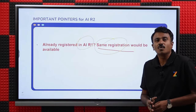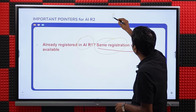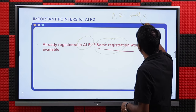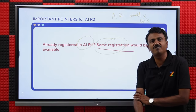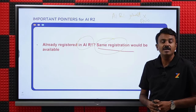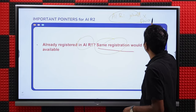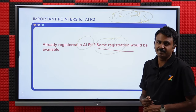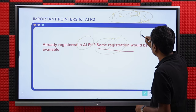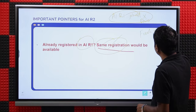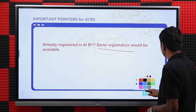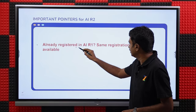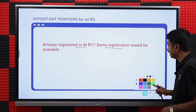Those who joined and were allotted in Round 1 but did not opt for upgradation — those candidates alone will not be able to fill choices. They might be able to log in but cannot fill choices. Everyone else can register with the same registration. If you missed Round 1 entirely and did not register, then there is fresh registration available. But if you already registered in All India Round 1, it is the same registration — nothing else to be done.